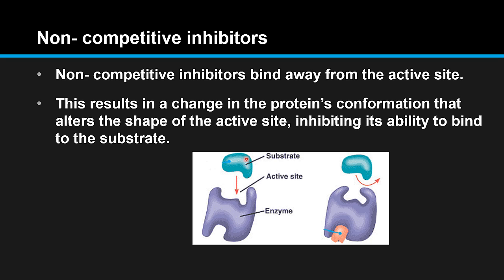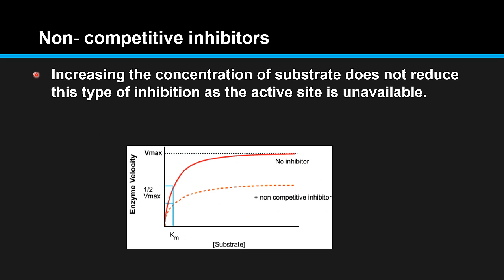Here we have the substrate and it binds to the active site of the enzyme. However, if we have a non-competitive inhibitor which binds away from the active site, the shape of the active site is changed so the enzyme cannot bind to the substrate.